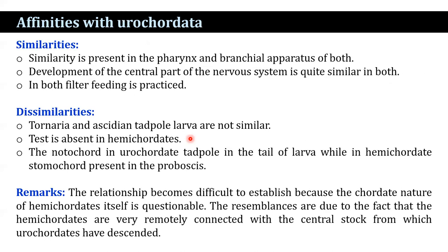Regarding affinities with Urochordata: similarities include the pharynx and branchial apparatus of both, development of the central part of the nervous system is quite similar in both, and filter feeding is practiced in both. Dissimilarities: tornaria and ascidian tadpole larvae are not similar; the test — a characteristic feature of Urochordata — is absent in Hemichordates; and in urochordates the notochord is in the tail of the tadpole larva, while in Hemichordates the stomochord is present in the proboscis. The relationship is difficult to establish because the chordate nature of Hemichordates itself is questionable. The resemblances are due to the fact that Hemichordates are very remotely connected with the ancestral stock from which urochordates descended.